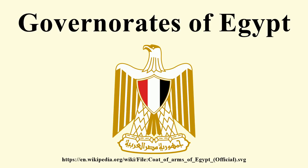Two new governorates were created in April 2008: Helwan and 6 October. In April 2011, however, the 6 October and Helwan governorates were again incorporated into the Giza and Cairo governorates, respectively. Luxor was created in December 2009 to be the 29th governorate of Egypt, but with the abolition of the 6 October and Helwan governorates, the number of governorates decreased to 27.